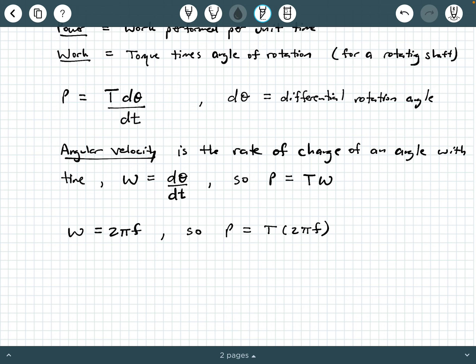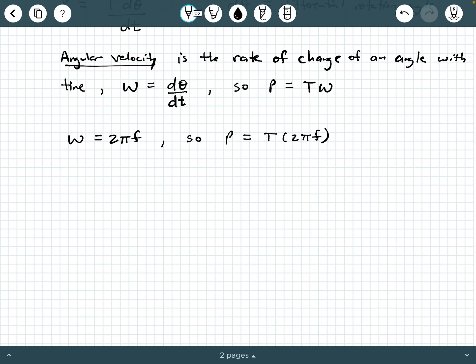So now we've got different forms, different versions of how we can express power based on potential given information in a design scenario or a problem. So let's talk about the units now. Let's talk about units of all of these important items. So power, P, has units of watts.